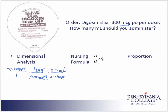This allows me to cancel the label of milligrams, and so my remaining label is milliliters, which is exactly what was asked — how many milliliters should you administer. So I'm ready to do the math. I take 300 times 2.5 divided by 1,000 divided by 0.125, and when I do all of that on my calculator, I come up with 6 milliliters.